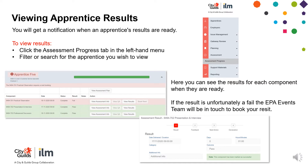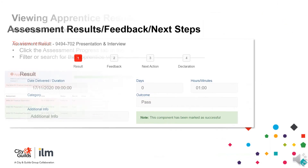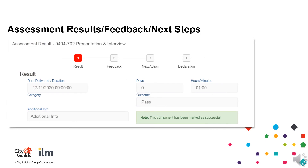If the result is unfortunately a fail, the EPA events team will be in touch to book your resit. For more information, click View Results in the Actions column. This will display the result, the feedback, next steps and the EPA declaration.